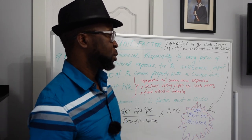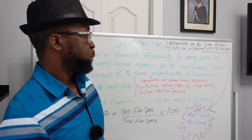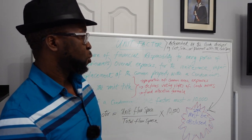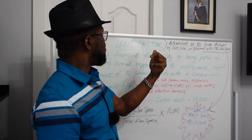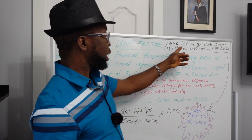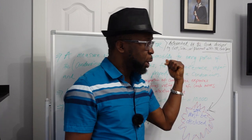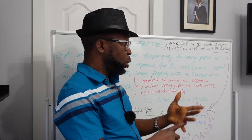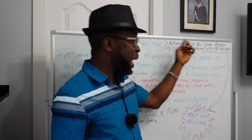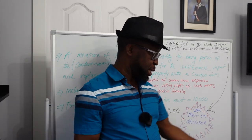A student asks for an example using a unit factor of 250. This leads to the question of who determines the unit factor. The unit factor is determined by the condo developer. It can be determined based on construction cost, or it could be a factor of size — the floor space — or the placement of the condominium unit.